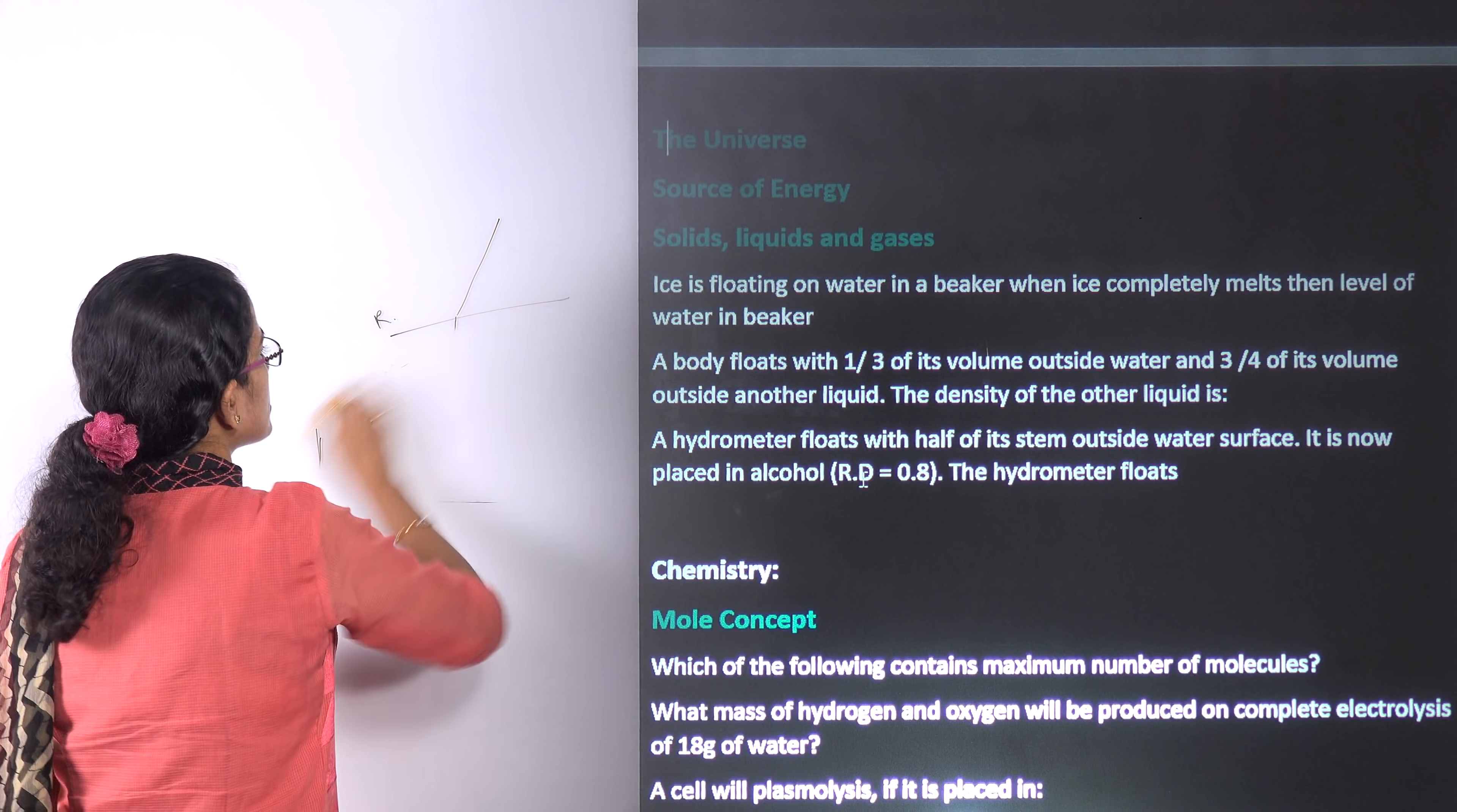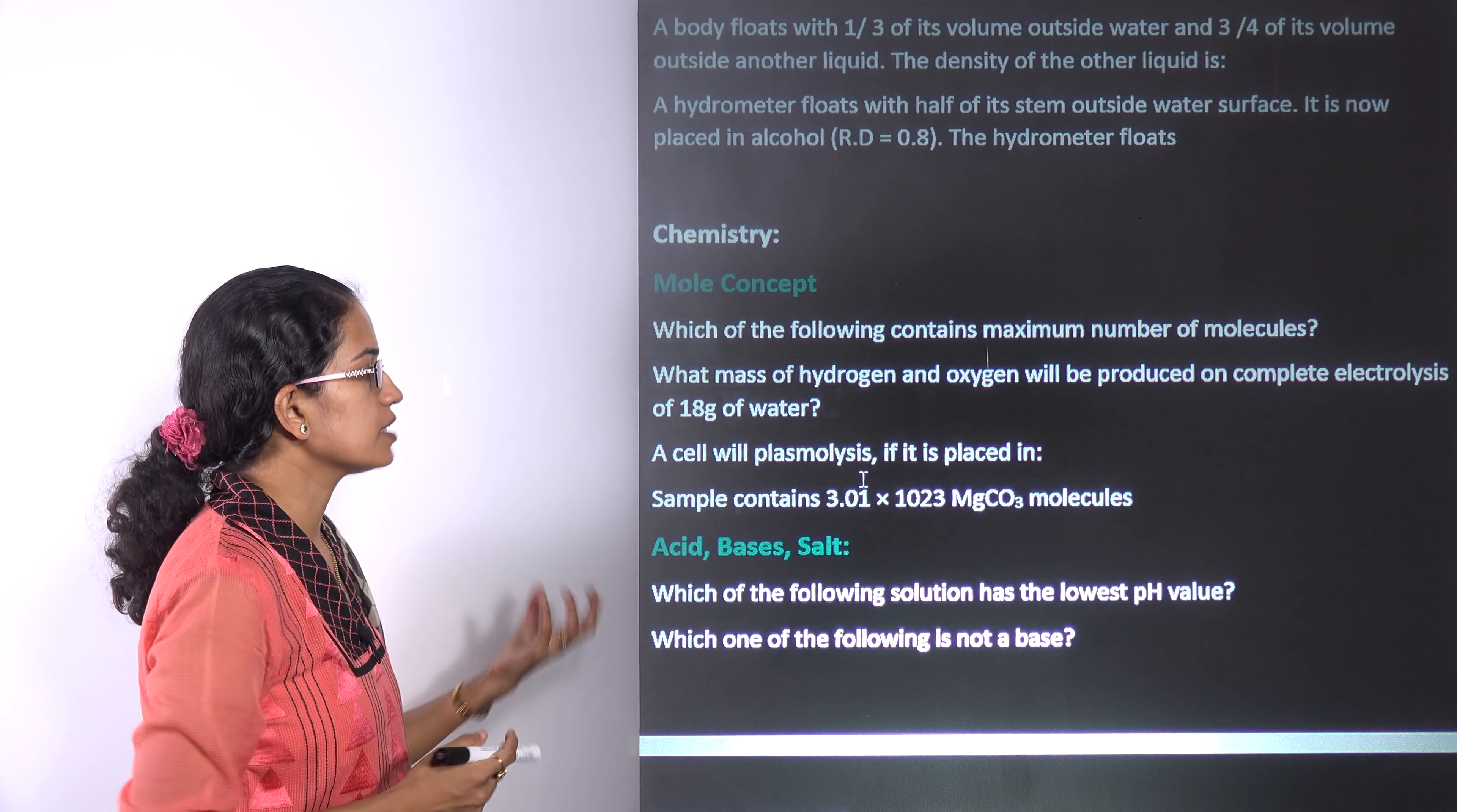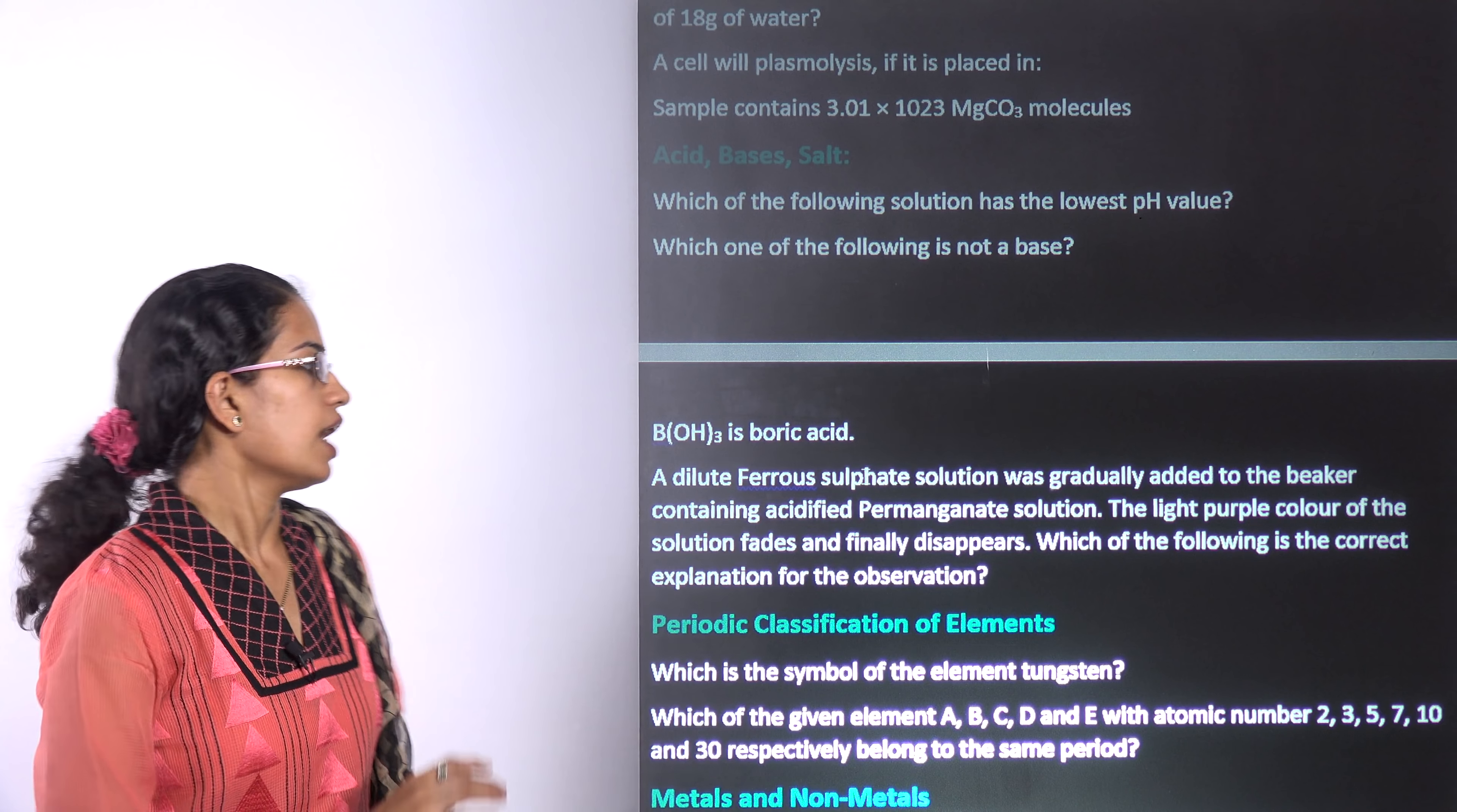The next is chemistry. Mole concepts are very important, less important for your stage one, very much important for your stage two. You have lots of questions on mole calculation. For example, a sample contains so and so magnesium carbonate molecules, what would be the molar mass. If there is plasmolysis taking place, what would be the results. Osmosis, reverse osmosis, plasmolysis are some questions being asked. Which of the following is a base, which is an acid, differentiating acid base, doing acid base reactions, finding oxidation number are common questions.